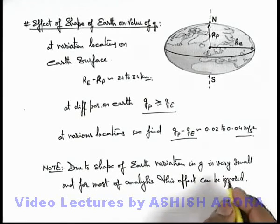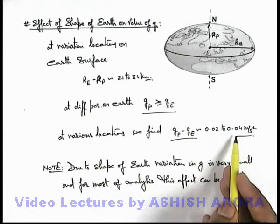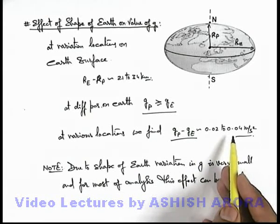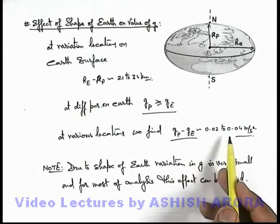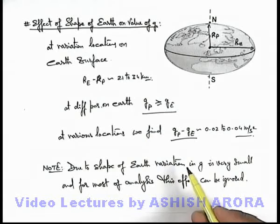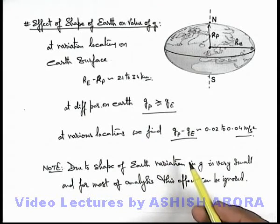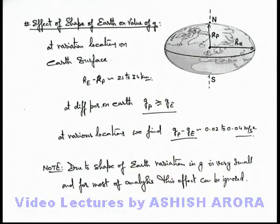But as far as only this effect is concerned, this is a significant effect you need to keep in mind. But when we talk about relative variation, the value of g at different locations is very small. So just for knowledge, you must be aware about how the value of g varies due to the shape of earth. Just keep it in your mind.